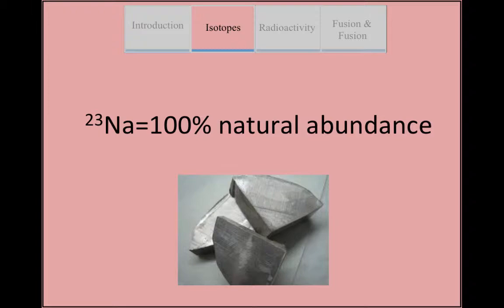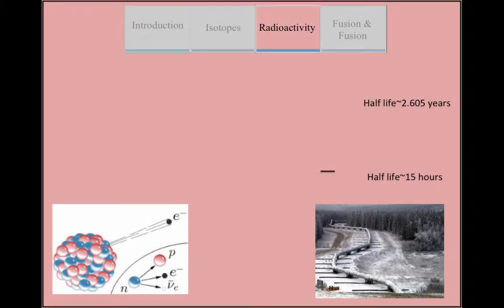Sodium-23 is the only stable naturally occurring isotope of sodium. Two of its most important artificial radioactive isotopes are sodium-22 and 24, both of which can be used as tracers for natural sodium.